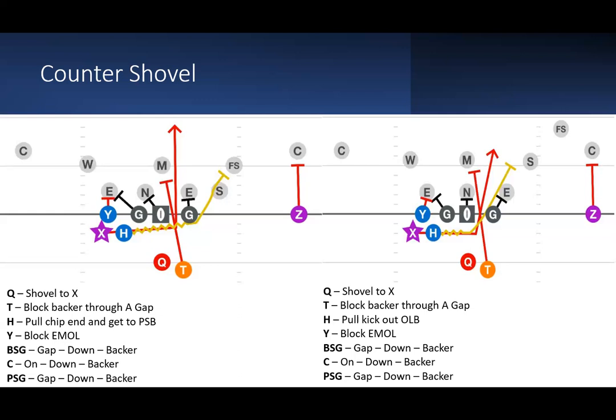The quarterback also could take if he sees that there's nothing to the backside of the play. He had the ability to take off, and then you could RPO this play as well instead of having the Z receiver block the corner. You could have him run a hitch or a slant or whatever route concept you like on this play.